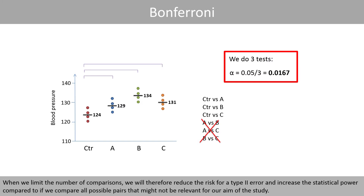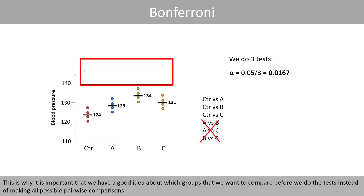When we limit the number of comparisons, we reduce the risk for a type 2 error and increase the statistical power compared to if we compare all possible pairs that might not be relevant for our aim of the study. This is why it is important to have a good idea about which groups we want to compare before we do the tests, instead of making all possible pairwise comparisons.